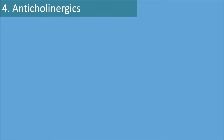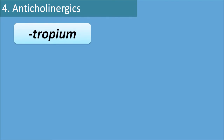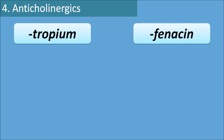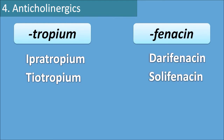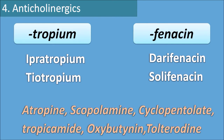The fourth category is anticholinergics, which have the suffixes 'tropium' and 'fenacin'. Drugs with the suffix -tropium include ipratropium and tiotropium. Drugs with the suffix -fenacin include darifenacin and solifenacin. However, many drugs in this category have different suffixes: atropine, scopolamine, cyclopentolate, tropicamide, oxybutynin, and tolterodine are not related to either tropium or fenacin.